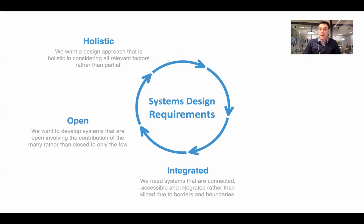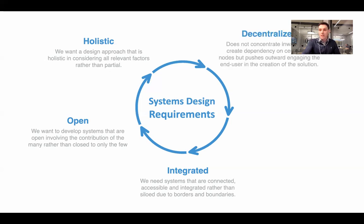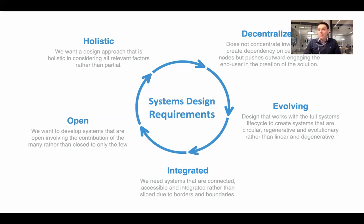Integrated: we need systems that are connected, accessible, and integrated rather than siloed by borders and boundaries — not separating into different domains and departments, but integrating and connecting. Decentralized: design that does not concentrate inwards and create dependencies upon a few nodes, but pushes outwards, engaging end users in the co-creation of solutions, making systems more resilient and equitable. Evolving dynamics: design that works with the full system lifecycle to create systems that are circular, regenerative, and evolutionary rather than linear and degenerative — ultimately sustainable, looking at how the system adapts, evolves, and regenerates itself.